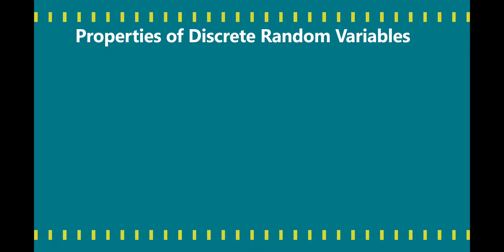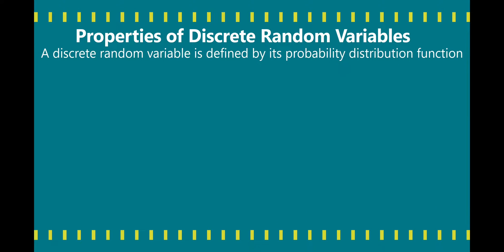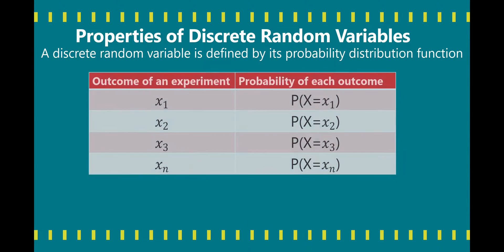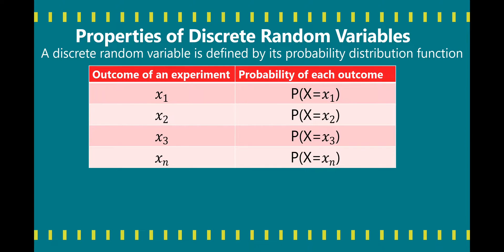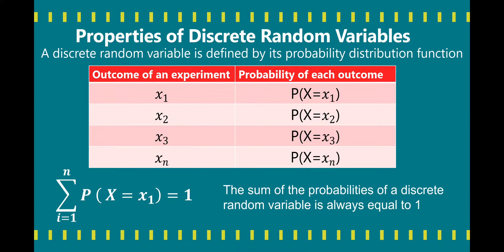Properties of discrete random variables. A discrete random variable is defined by its probability distribution function — that is, the possible outcomes of an experiment and the probability of each outcome. For the outcomes, we have x sub 1 to x sub n, and the probability of each outcome is P of x equal to x sub 1 to x sub n. The sum of the probabilities of a discrete random variable is always equal to 1.